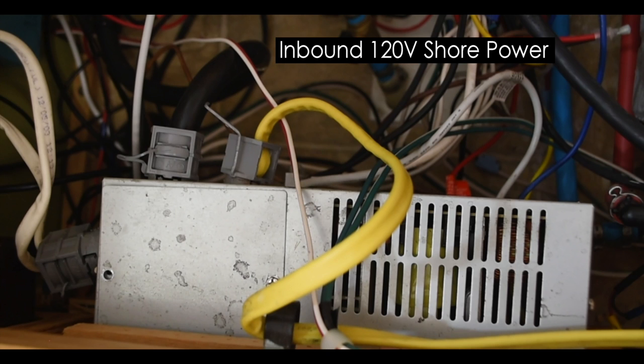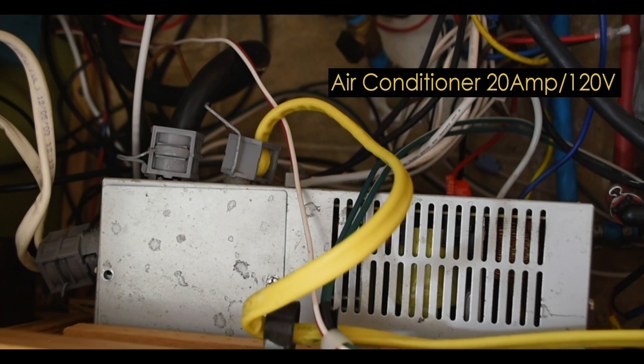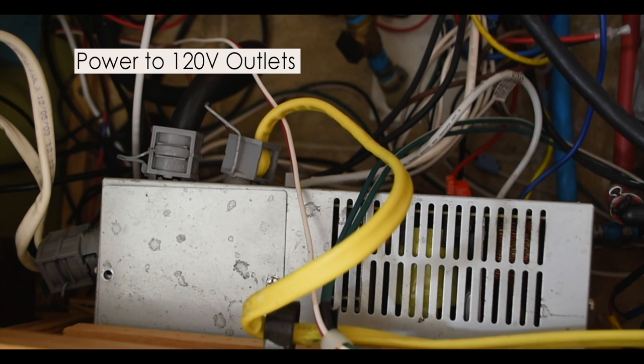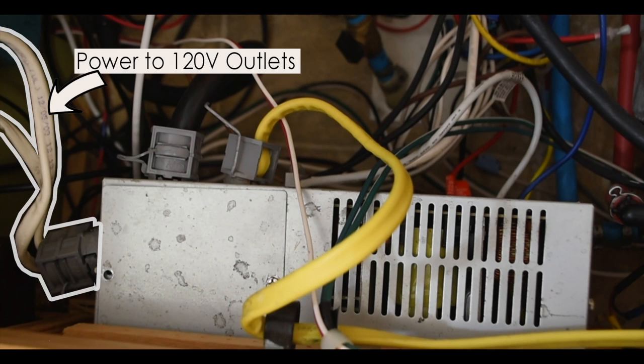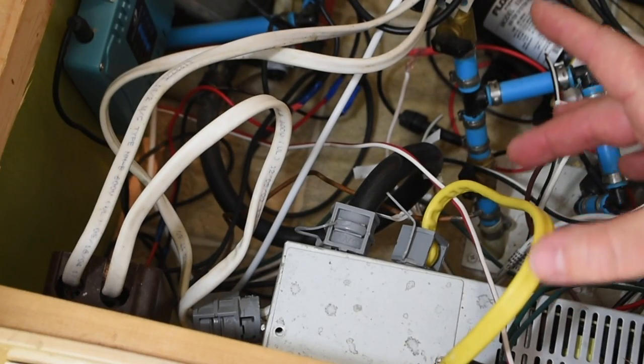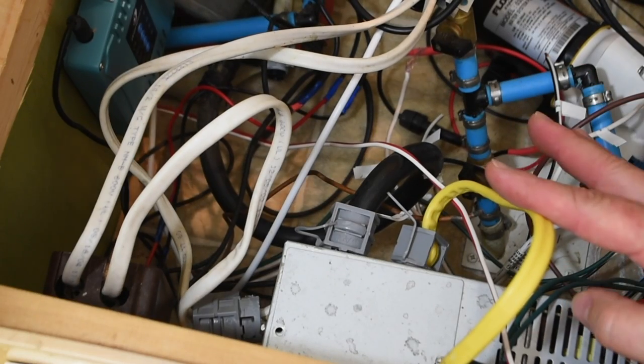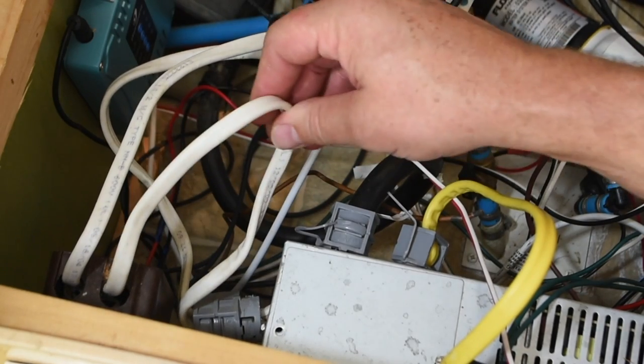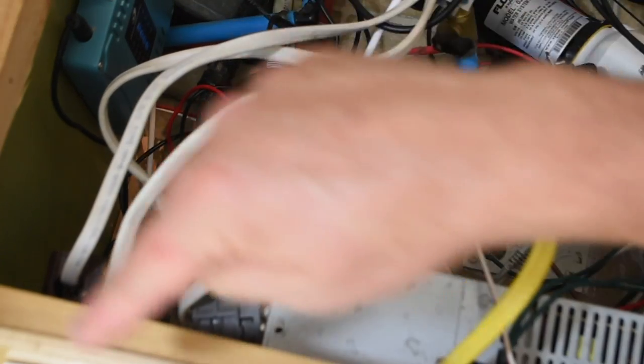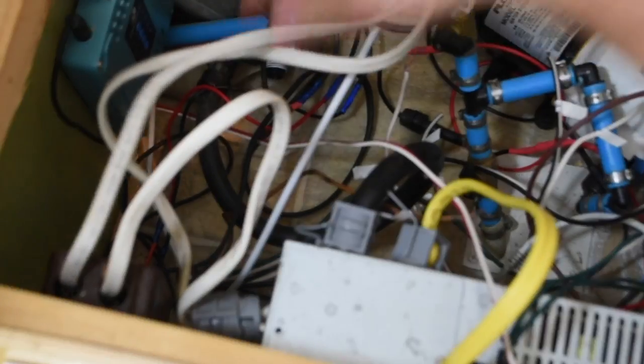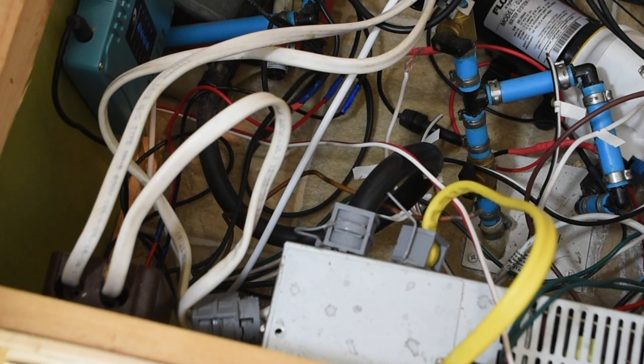For a quick power view here's my inbound 120 volt shore power, the air conditioning cable here that is the outbound that powers the air conditioner, and then finally the power that runs out to all the outlets in the camper.